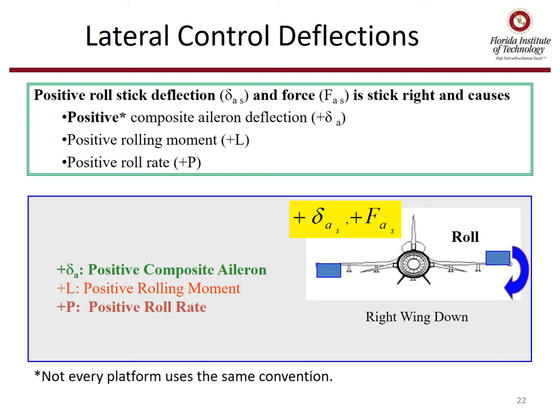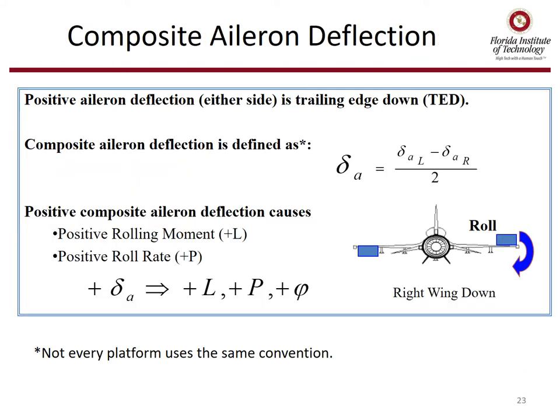For lateral control definitions, positive roll stick deflection and force is stick right, and causes positive composite aileron deflection — which we'll define next — but that will lead to positive rolling moment and positive roll rate. Positive aileron deflection either side is trailing edge down. Composite aileron deflection is defined as left aileron minus right aileron divided by two.